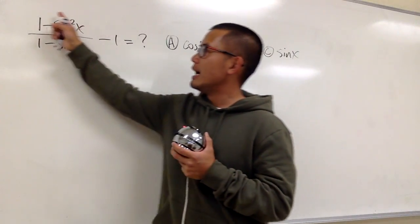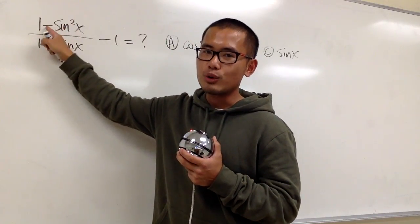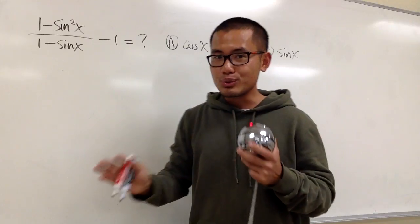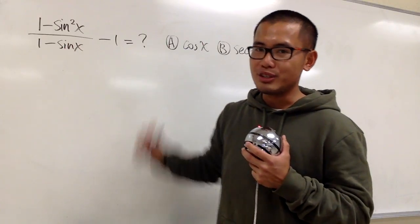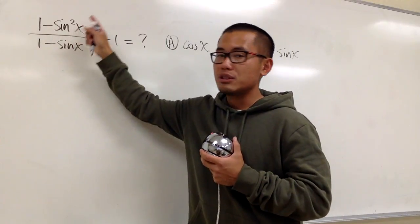Well, yes, I noticed that on the top, 1 minus sine squared x, this is the same as cosine squared x. But I'm not going to do that because it wouldn't do us any good. I cannot simplify anything if I replace the top with cosine squared x.